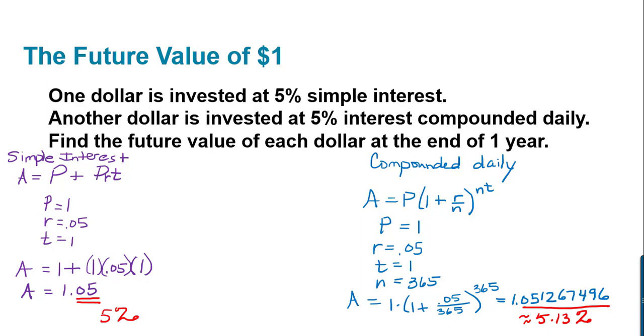Plugging into our compound interest formula, we have 1 times 1 plus 0.05 over 365 to the 365th power. And what happens is that you actually have the dollar turn into $1.05 plus a little bit more, a fraction of a penny more, which if you have a bunch of dollars invested or you invest for multiple years is going to add up. So really, you're not just earning 5%, you're earning 5.13% approximately on that dollar.